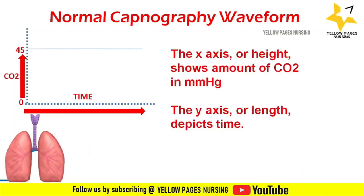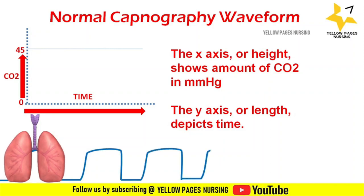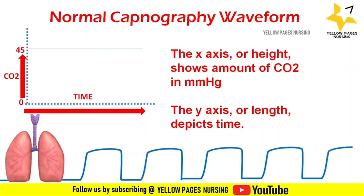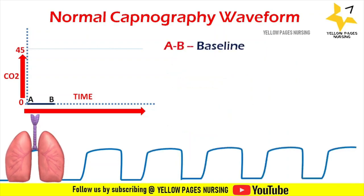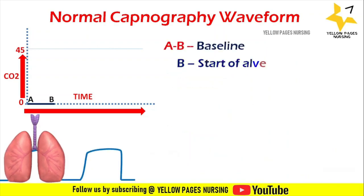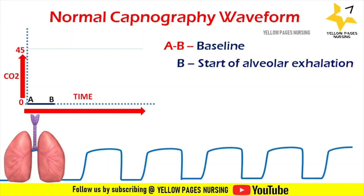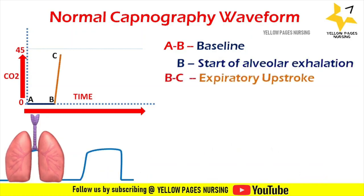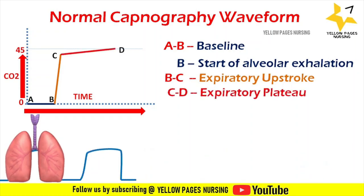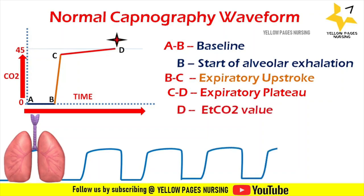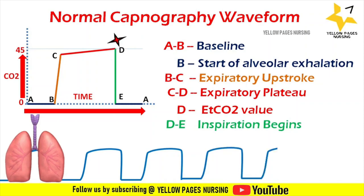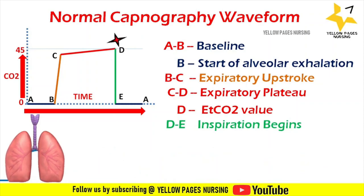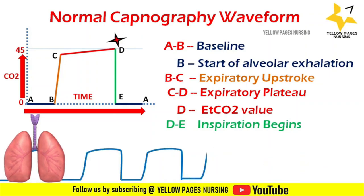Here is the normal capnography waveform. The x-axis (height) shows the amount of CO2 in mmHg; the y-axis (length) depicts time. A–B denotes the baseline where B is the start of alveolar exhalation; B–C denotes the expiratory upstroke; C–D denotes the expiratory plateau; D denotes the EtCO2 value; and D–E denotes where inspiration begins.